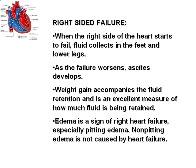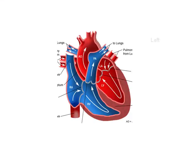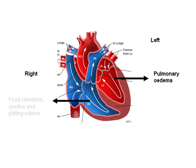To summarize: left-sided cardiac failure results in pulmonary edema. Right-sided cardiac failure results in pitting edema, ascites, and fluid retention. We shall have an overview in this diagram — in left-sided cardiac failure, pulmonary edema develops; in right-sided cardiac failure, fluid retention, ascites, and pitting edema develops. Thank you very much.